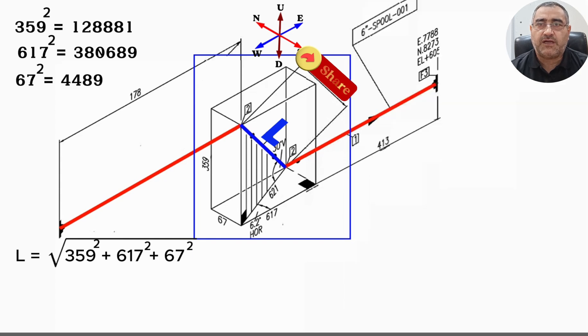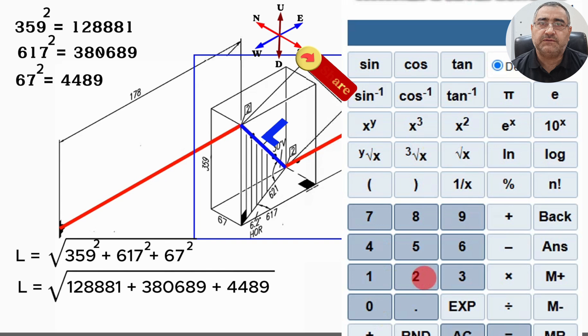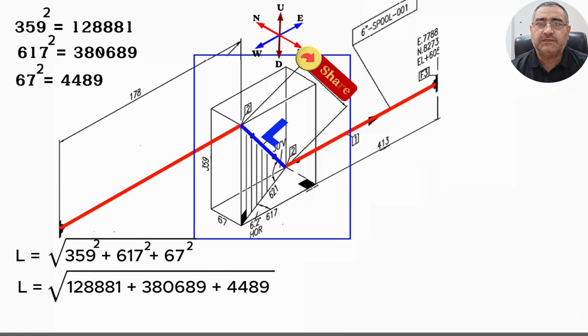Now add these results into our formula. Using the calculator, we find that 128,881 plus 380,689 plus 4,489 equals 514,059.